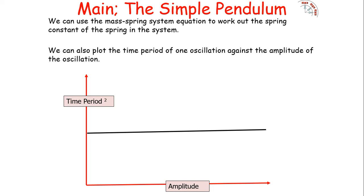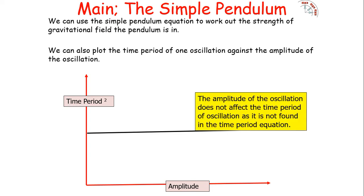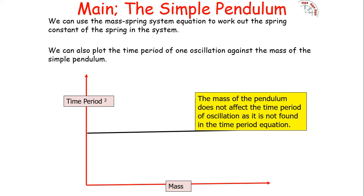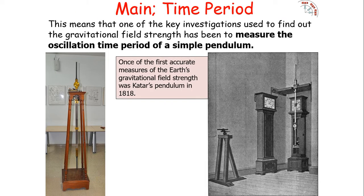If you plot the time period squared against the amplitude of oscillation, nothing would change, because amplitude does not affect the time period — it's not found in the equation. Similarly, plotting time period against the mass of the pendulum gives a flat line, since mass does not affect the time period either. One of the key investigations used to find gravitational field strength has been to measure the oscillation time period of a simple pendulum.